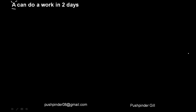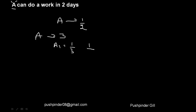The most simple statement in this topic: A can do a work in 2 days. If A can do a work in 2 days, that means in one day he does half of the work. In the first day he finishes 50% of the work, in the second day he finishes the remaining 50%. If A can do a work in 3 days, that means each day he finishes 1/3 of the work.